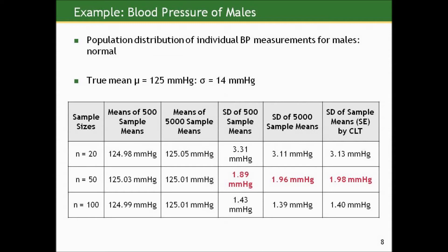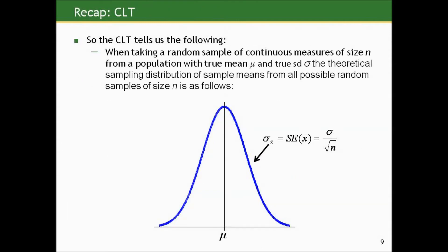Let's recap the central limit theorem. When taking a random sample of continuous measures of size n from a population with true mean mu and true standard deviation sigma, the theoretical sampling distribution of sample means from all possible random samples of the same size n is given by a normal curve, which is centered at the true mean and has standard deviation equal to sigma divided by the square root of the sample size n.